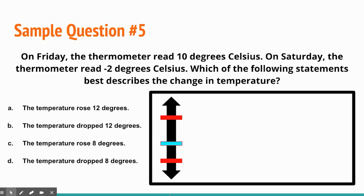Again, we start with zero, that is our anchor number to help us determine distance. 10 degrees above, positive 10 degrees Celsius, negative two degrees Celsius. So let's check our distance between the two.